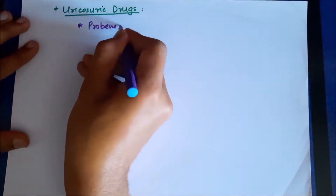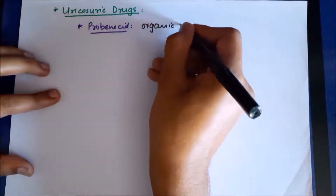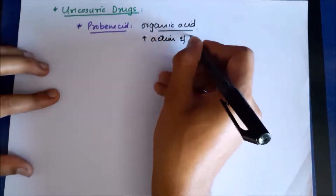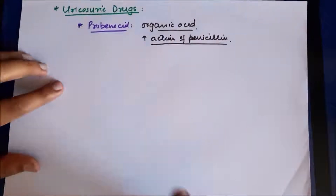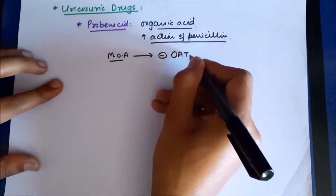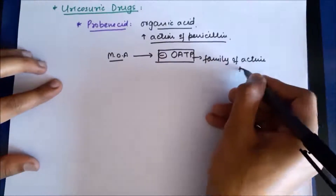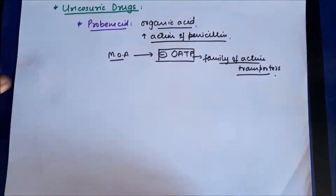The main drug in the uricosuric class is probenecid. Chemically it is an organic acid, and it was originally developed to increase the action of penicillin by decreasing its secretion in the renal tubule. Its mechanism of action involves inhibiting a family of active transporters called organic acid transport proteins, which are responsible for active secretion and reabsorption of various substances.